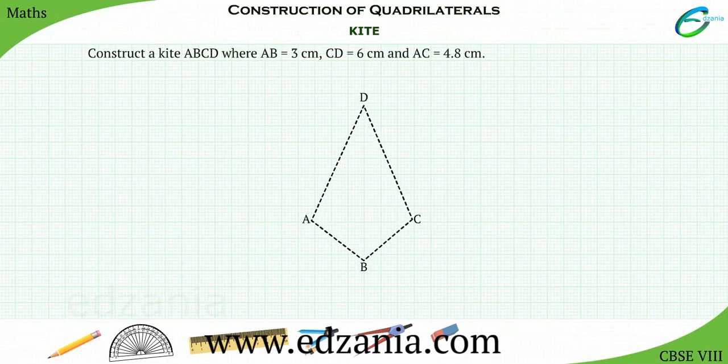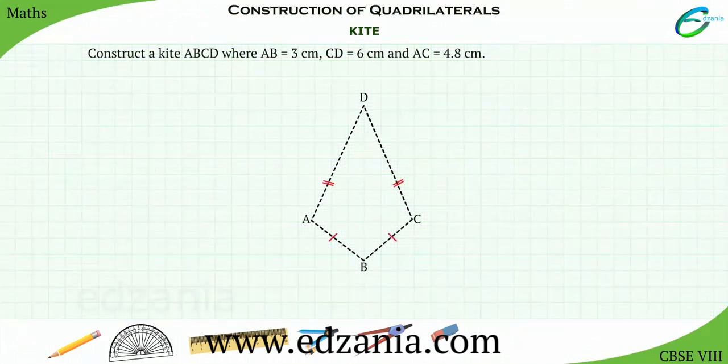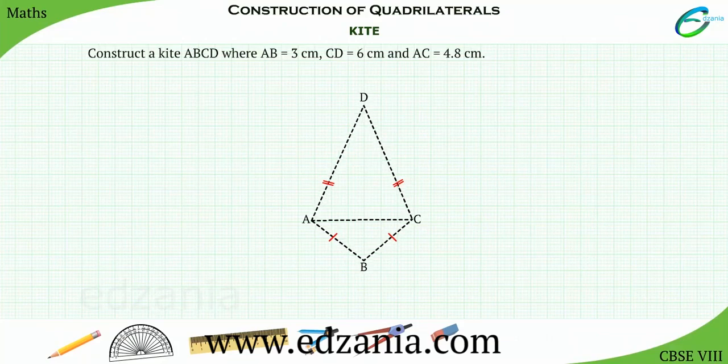A kite is a quadrilateral with congruent adjacent sides. Have a look at the rough diagram.